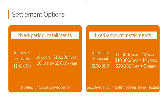Fixed amount installments is where you choose a fixed set dollar amount — say $20,000 a year. With a $100,000 death benefit, $20,000 times five years gives you your $100,000 total. So in year six, if you're still alive, you will have no income coming to you because you chose a fixed amount of money and it's now been paid out. You can outlive either one of the fixed choices.